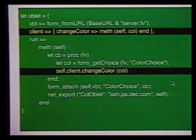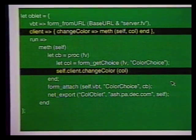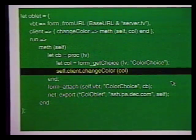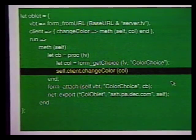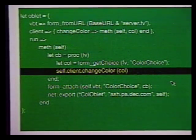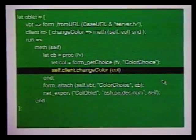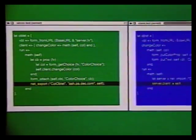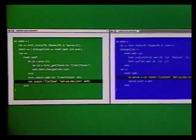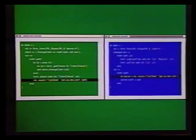However, because the run method of Mark's oblet changes the client field to refer to an object on his machine, after Mark's browser loads the oblet, the effect of the call to self.client.changecolor in my oblet is to invoke the change color method of an object on Mark's machine, and this method is executed on Mark's machine. The only statements in the two oblets that are related to distribution are the net export statement in my oblet and the net import statement in Mark's oblet.